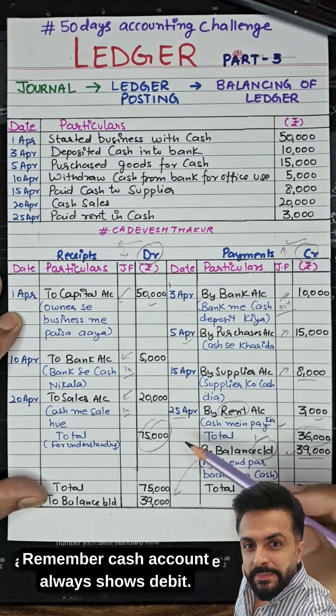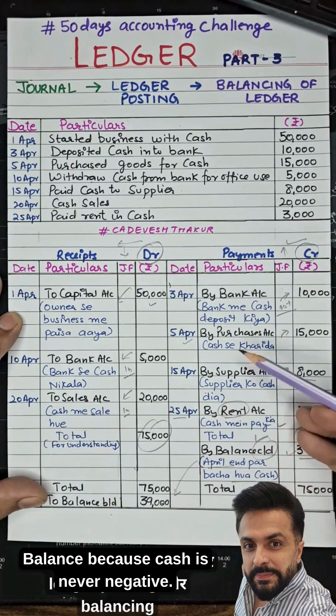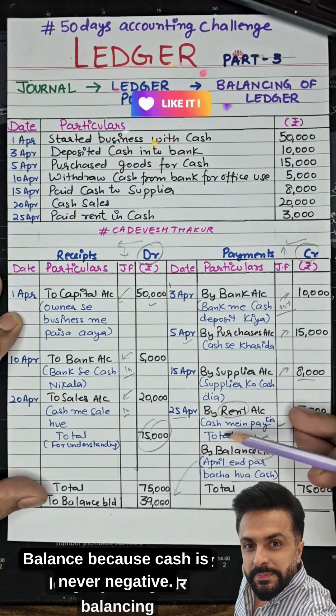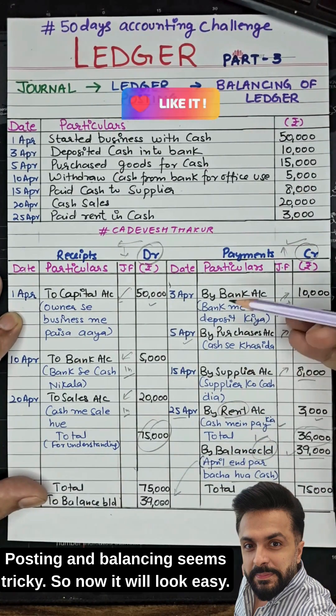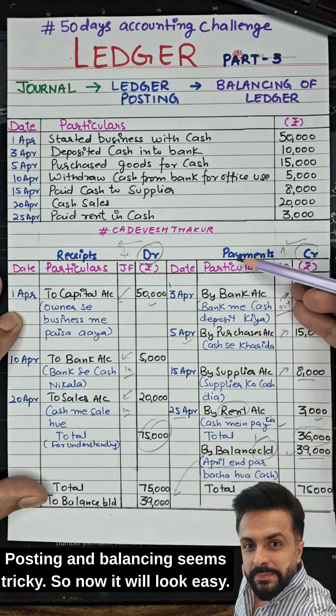Remember, a cash account always shows a debit balance because cash can never be negative. Posting and balancing may have seemed tricky before, but now it should look easy.